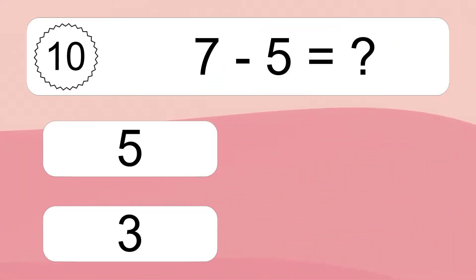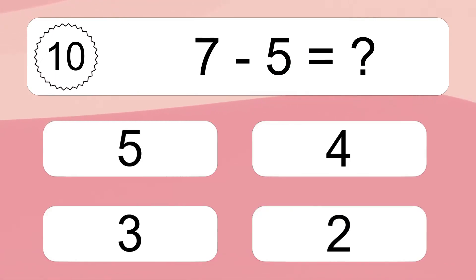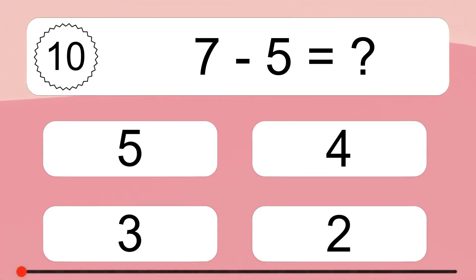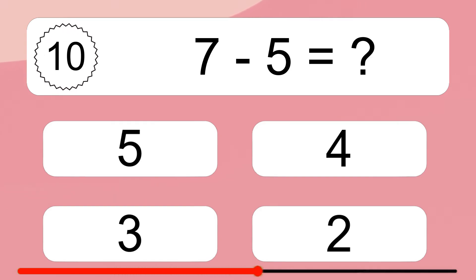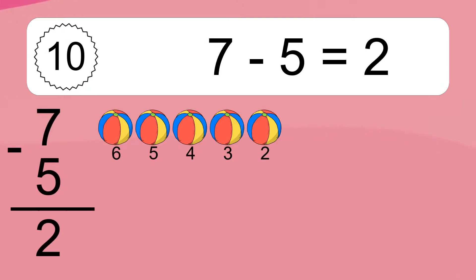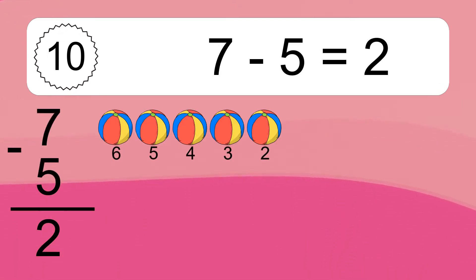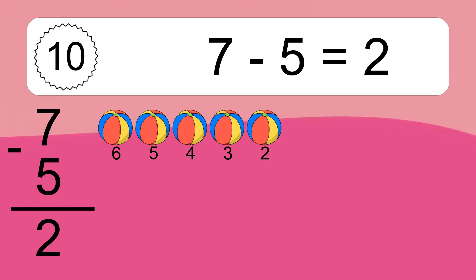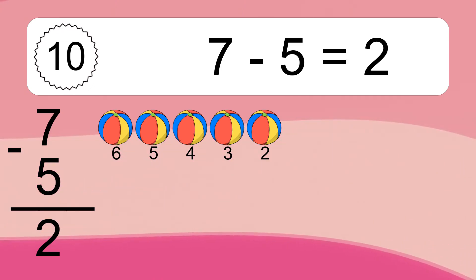7 minus 5 equals what? 7 minus 5 equals 2. Let's count it: 6, 5, 4, 3, 2.